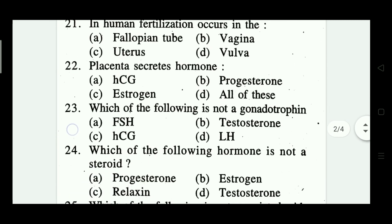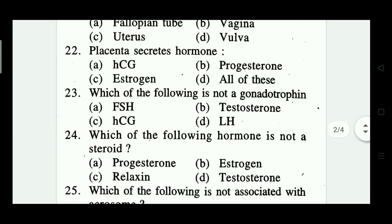Question number twenty-two: placenta secretes which hormone? Options: HCG, progesterone, estrogen, all of these. Which one is correct? Yes — all of these. That means option D is correct.